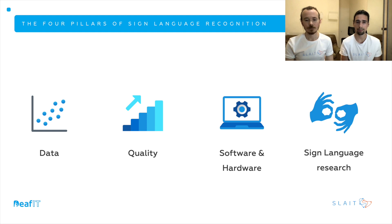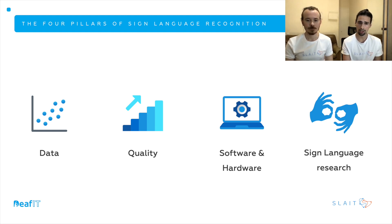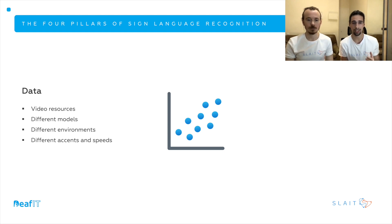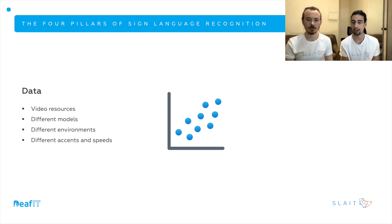The four pillars are data, the quality of this data, the software and hardware we're using, and sign language research. Starting with data — this means the resources, especially video resources, we need to train the artificial intelligence. We need lots of video resources with different models, because if we train on videos with the same person, it will only learn to recognize that person. We also need different background environments, and we need to train the AI with different accents and speeds, because not all people sign the same way.